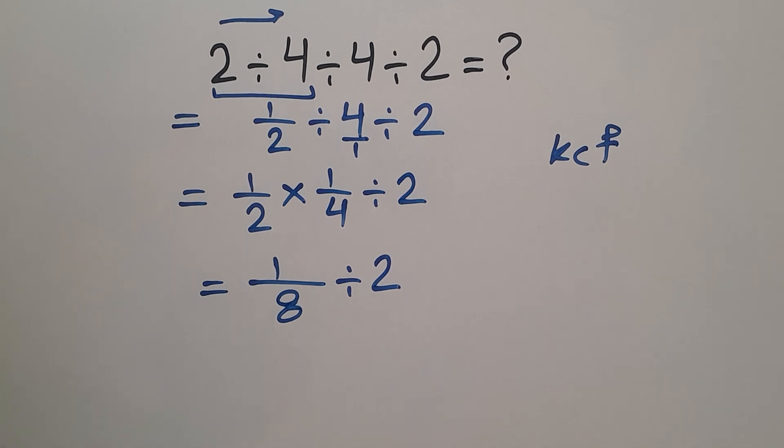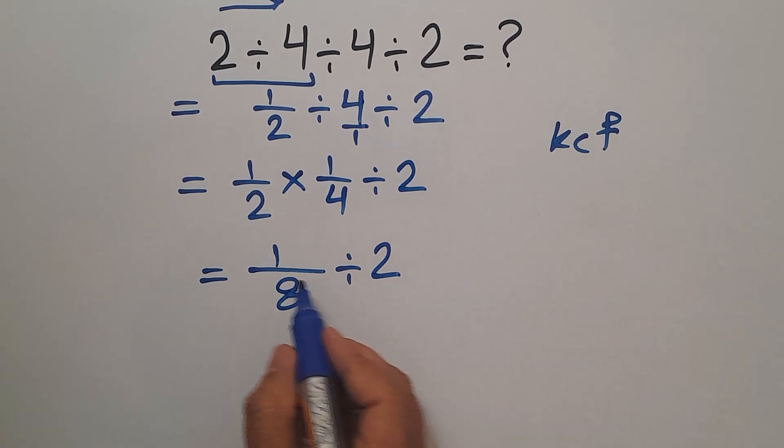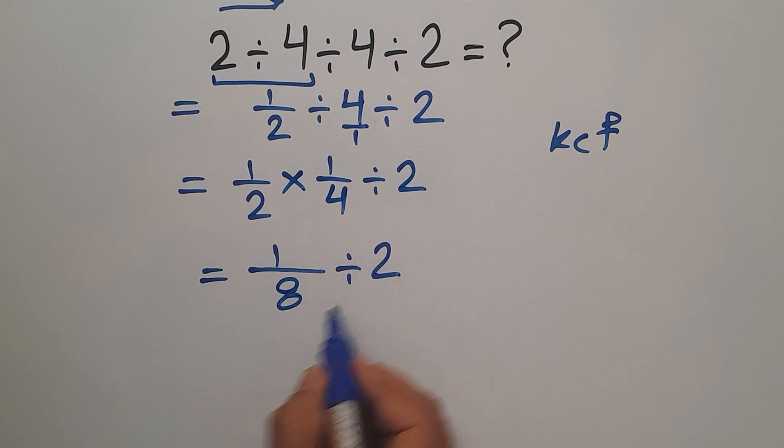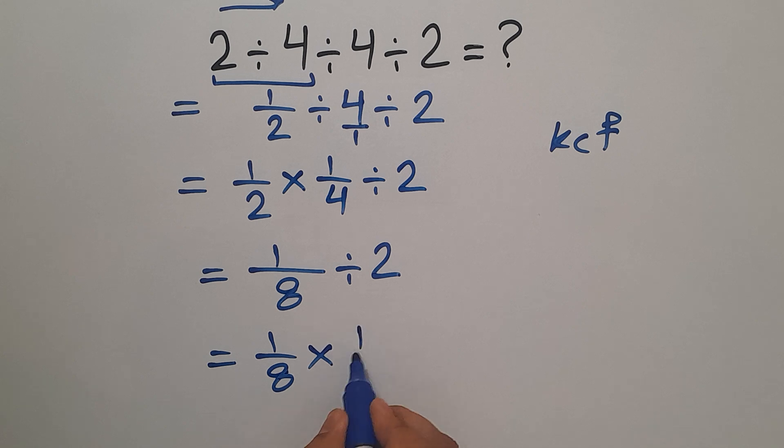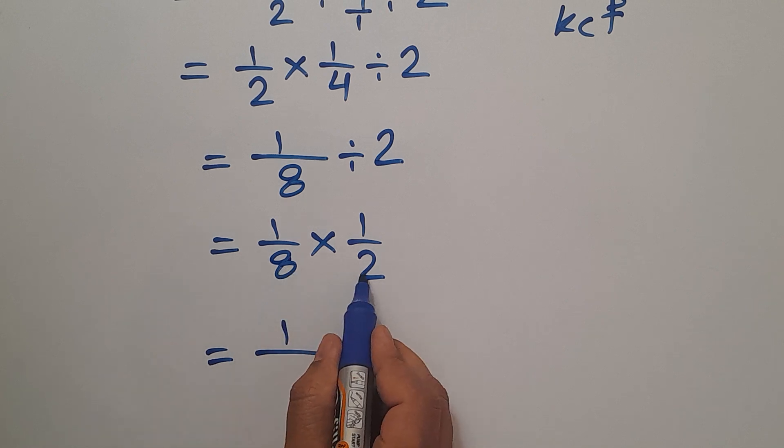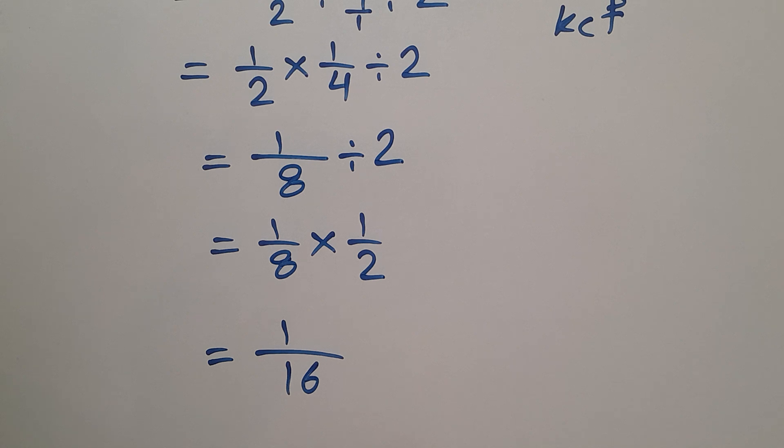Again according to the KCF rule, 1 over 8 divided by 2 can be written as 1 over 8 times 1 over 2, and this is equal to 1 divided by 16. So our final answer to this problem is just 1 over 16.